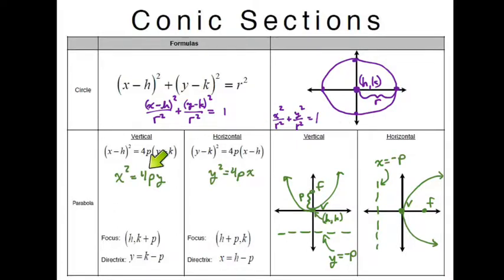If your h, k is at the origin that means your h and your k would be zero, so these would be the standard forms. Just so you guys are familiar with what they look like, notice that the squared term is all alone. That is the standard conic section form.